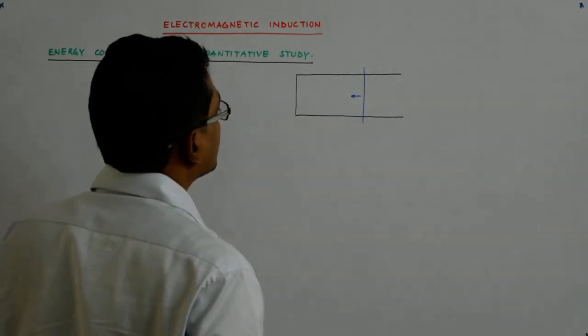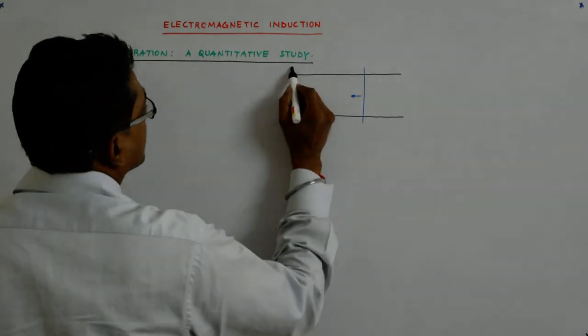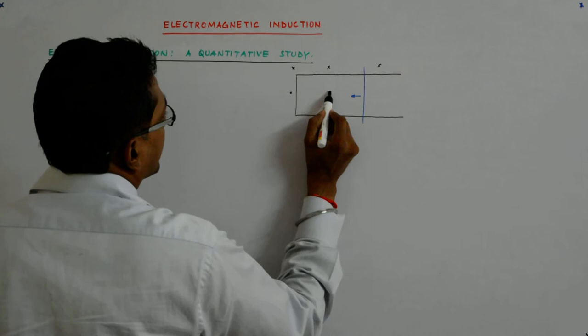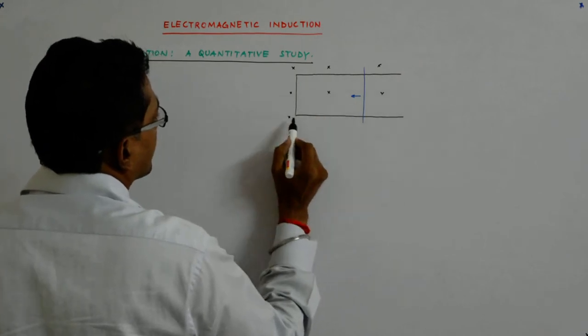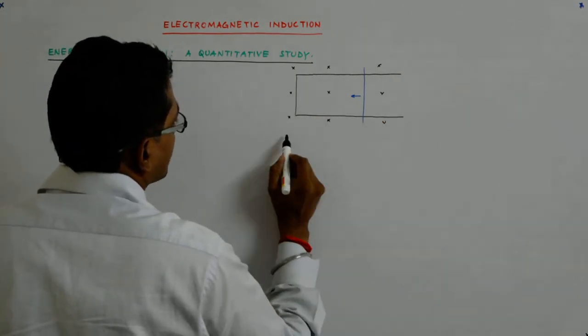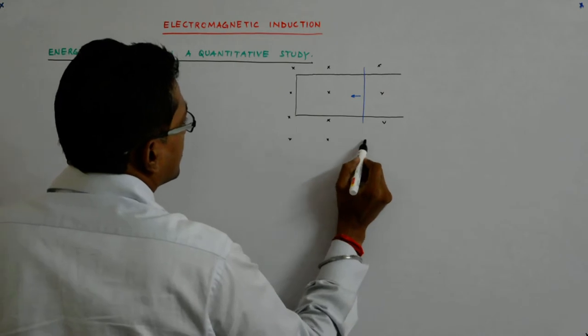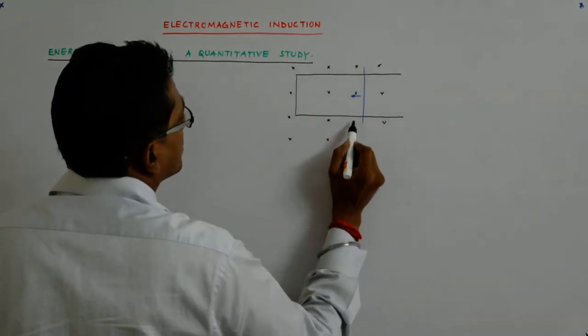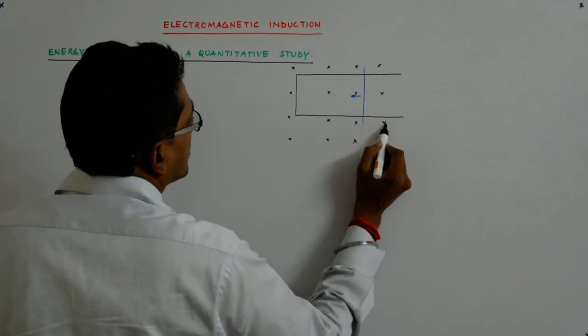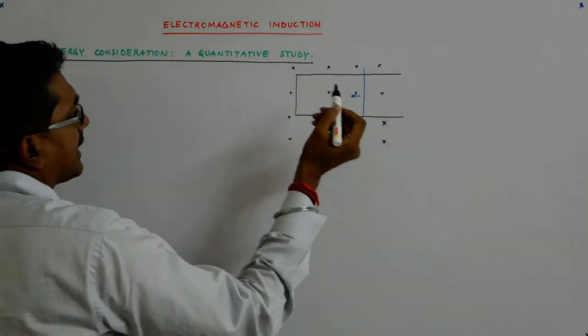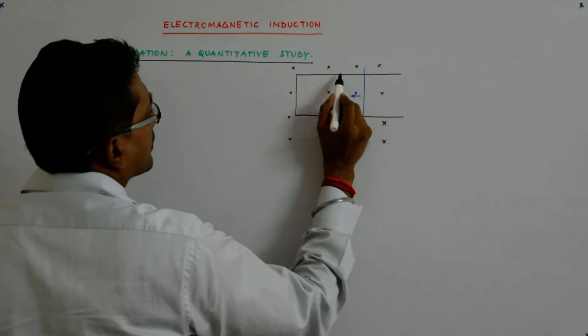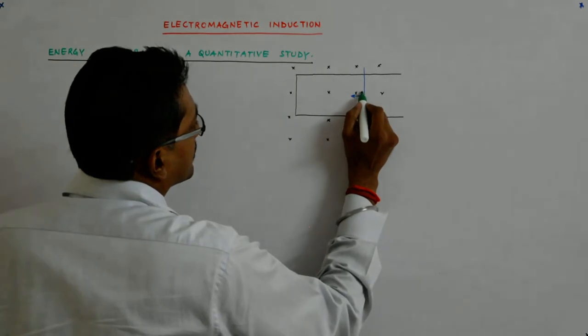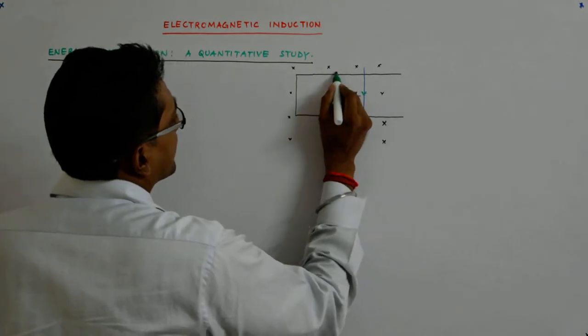that moves like this and the magnetic field was into the board, then we saw that it will have a circulating current in the clockwise direction.